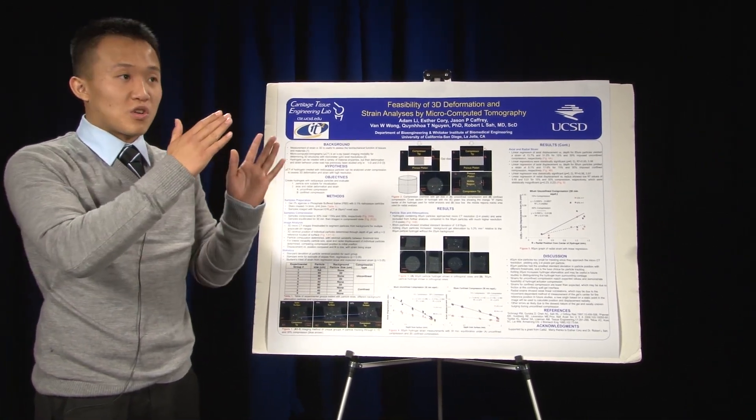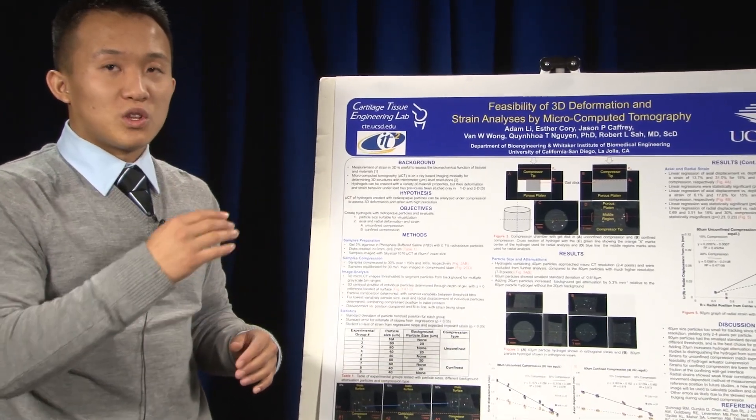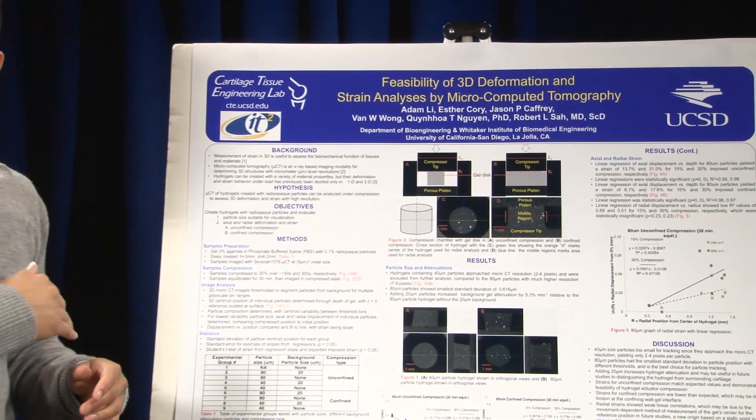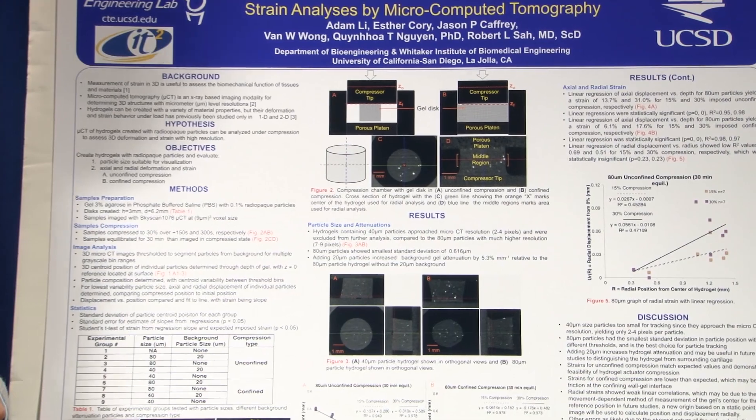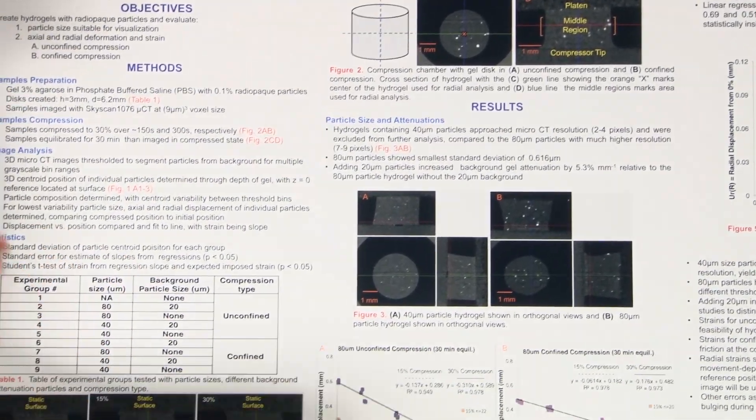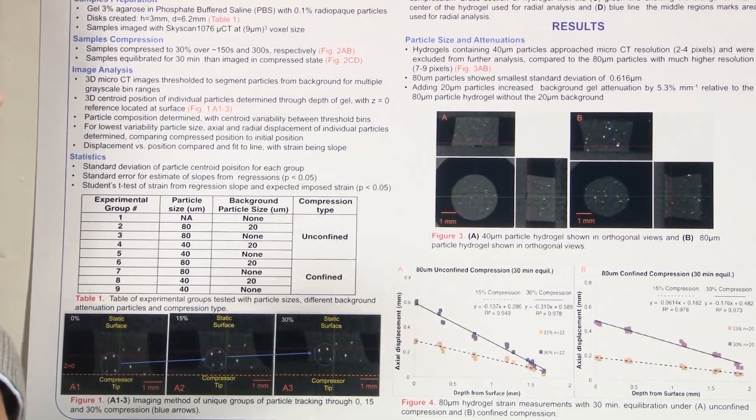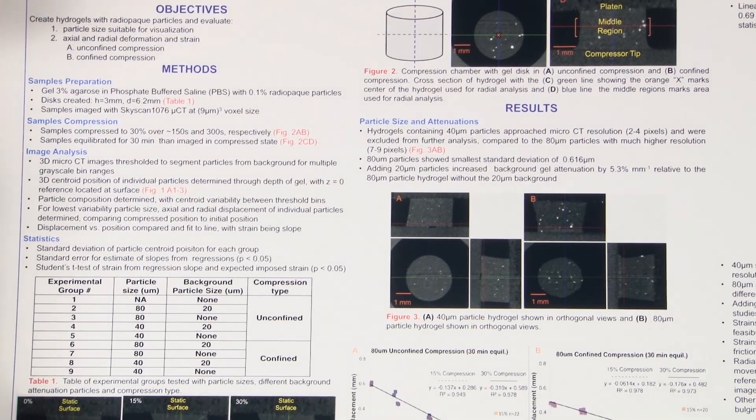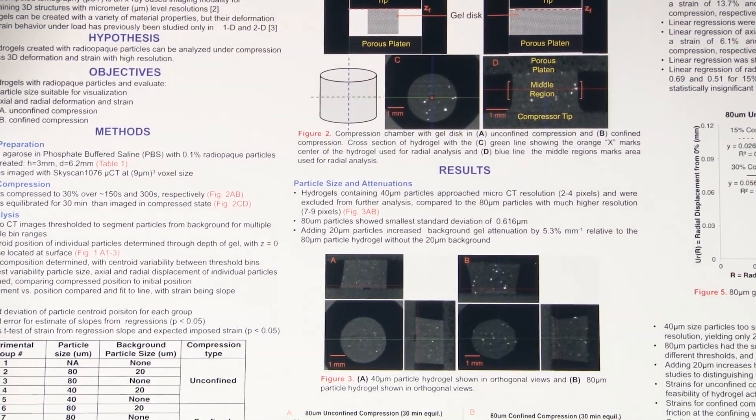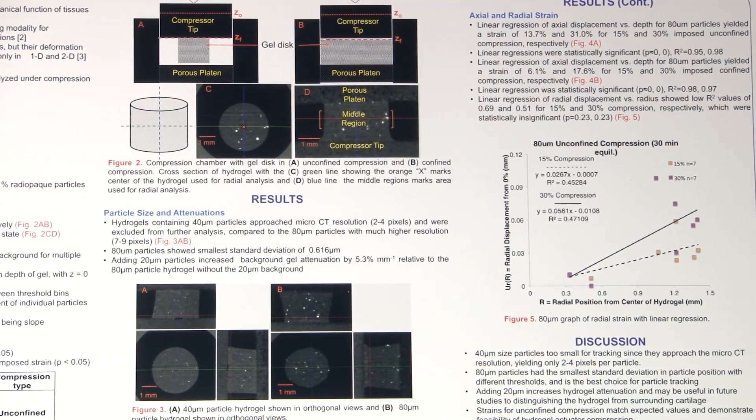In order to alleviate that in the future, we are going to just pick a really small area in the hydrogel in the middle and analyze particles along that region. Because of that, the reference position should stay relatively the same, and we should expect linear correlation.